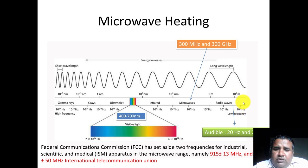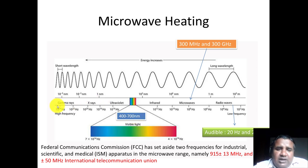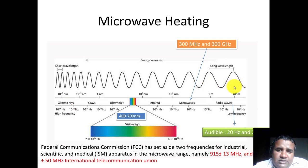Here you can see the wavelength is around 10 to the power 3 meters on one end and 1 meter further along. If we talk about visible light, the wavelength of visible light is between 400 to 700 nanometers, and finally we end up with gamma rays.